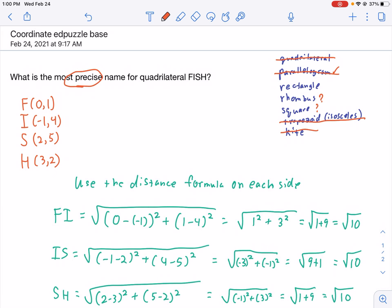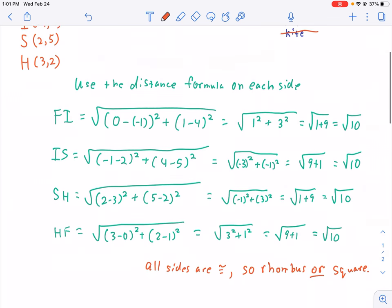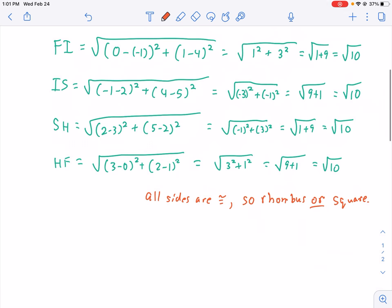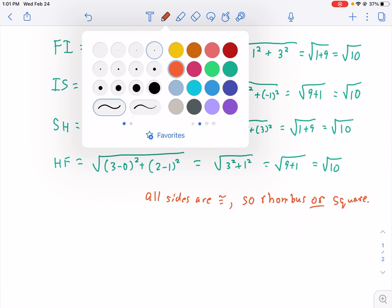We need to check, is it a rectangle as well? If it is a rectangle, then, in addition to being a rhombus, then it will be a square. If it's not a rectangle, then it's just a rhombus. How do we check that?